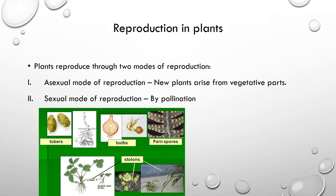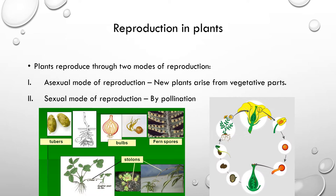The second mode of reproduction in plants is sexual reproduction, which occurs through the process of pollination. In pollination, pollen grains and the ovules found within the ovary of the plant unite through the process of fertilization and produce seeds. These seeds then germinate and produce new plants. These are the two main types of reproduction found in plants.